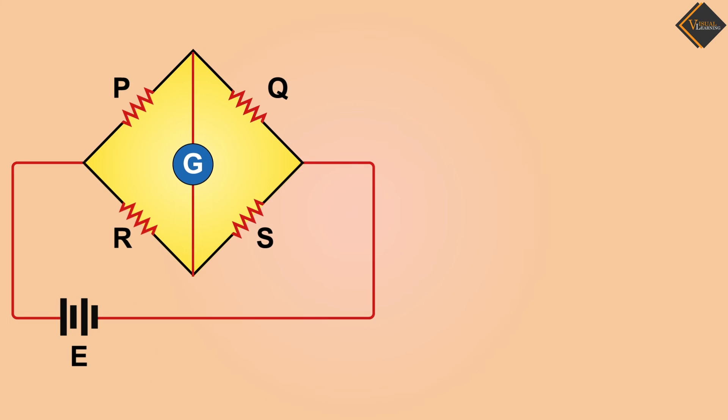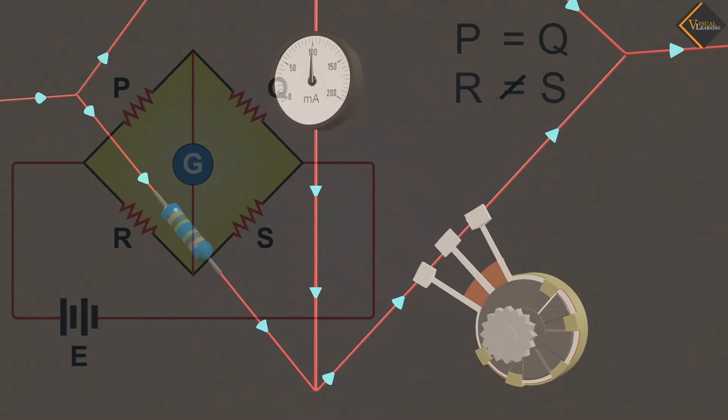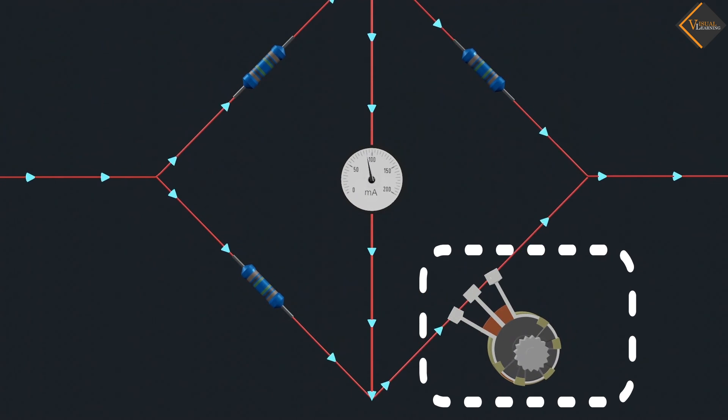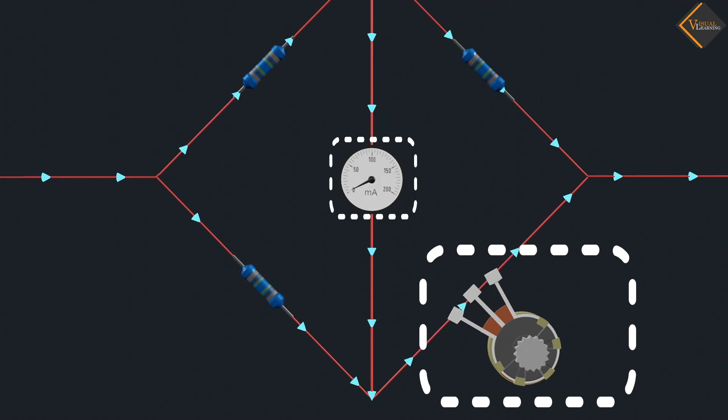As we know, resistors P and Q are balanced, but resistors R and S are unbalanced. To balance these, we adjust the variable resistor S, noting the value of current in the galvanometer.